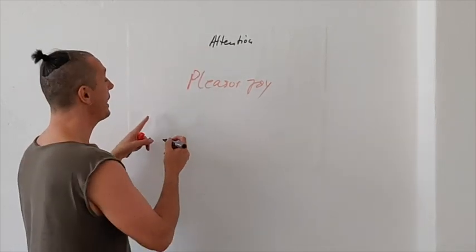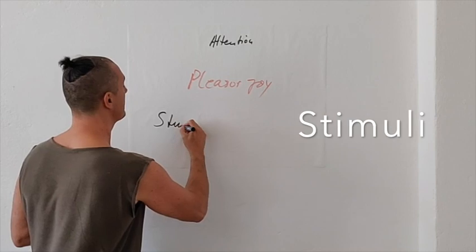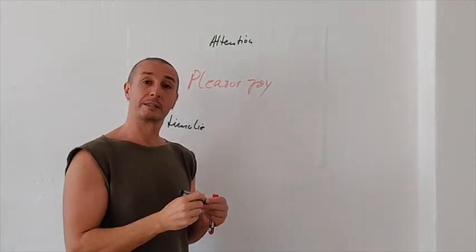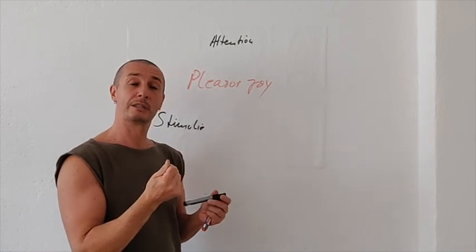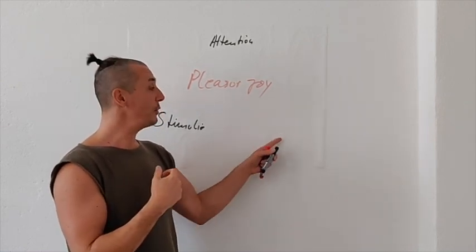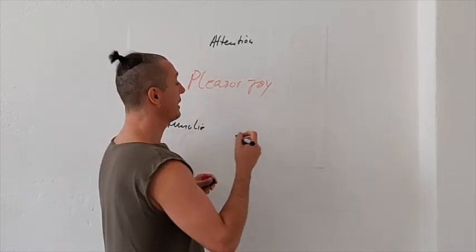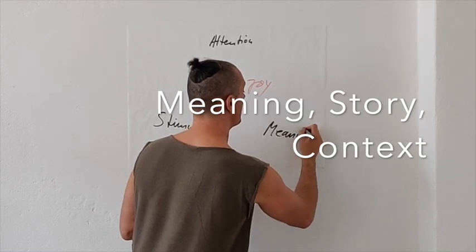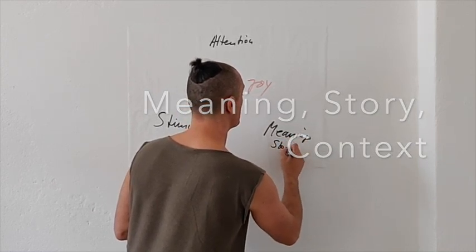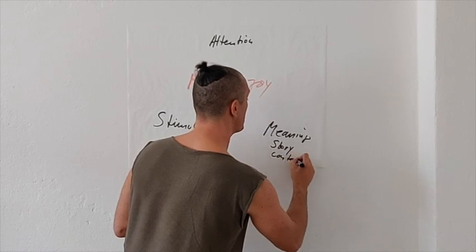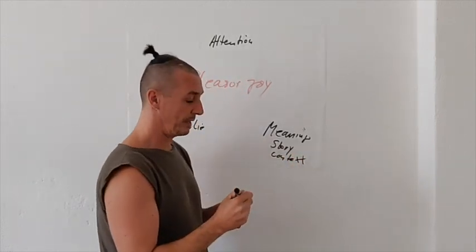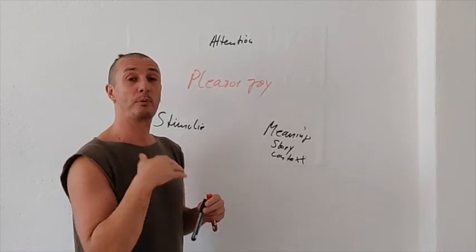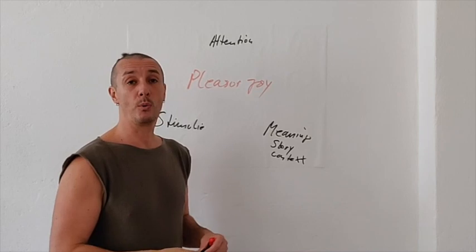So the first one is attention and the second one is the stimuli of what you're feeling. What is the experience in your skin? And the third one is the meaning or the story or context. All three components of joy and pleasure are present all the time in our awareness.